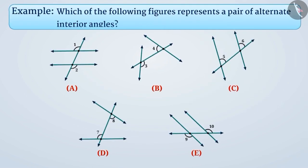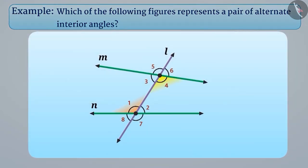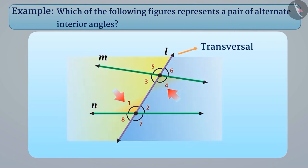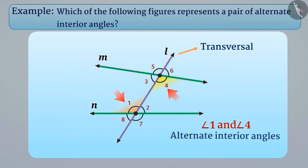Next example. Which of the following figures represents a pair of alternate interior angles? We have learned that two angles having a different vertex and are on the opposite sides of the transversal are called alternate interior angles.